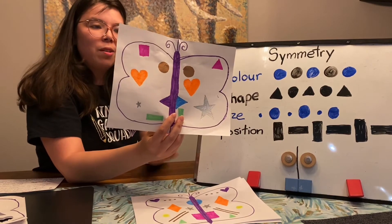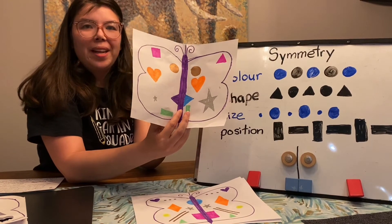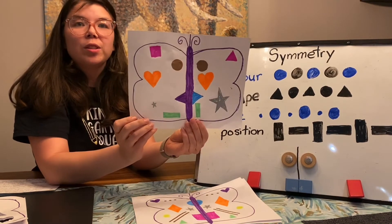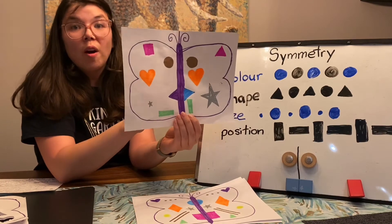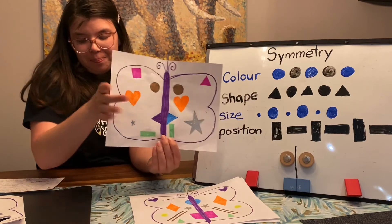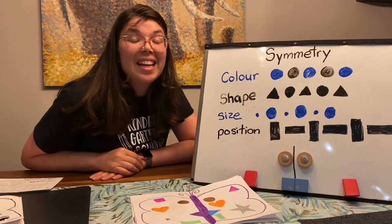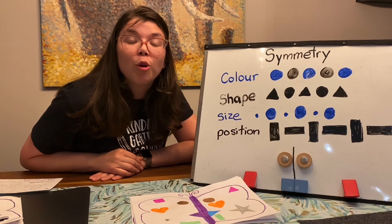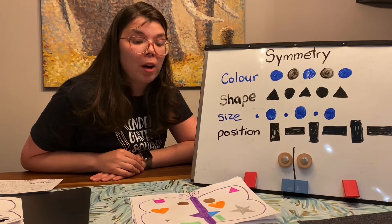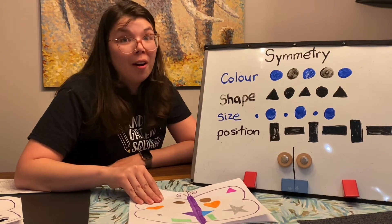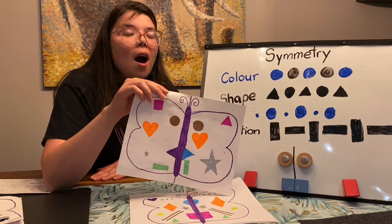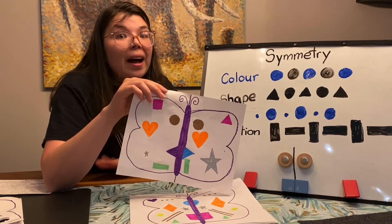Can you make your own symmetrical butterfly? One easy way to do it is to fold the paper in half and you can trace the wings so that you know the wings are symmetrical before you start drawing in your different shapes, colors, sizes, and positions. But it's actually really hard to make something perfectly symmetrical because even things that seem symmetrical might be a little bit off — I'm still working on my drawing. So some of my positions and shapes and colors are probably a little bit off.